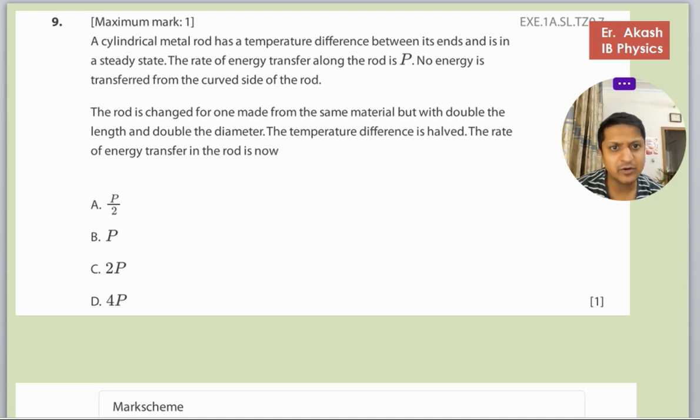The rate of energy transfer along the rod is P. No energy is transferred from the curved side of the rod. The rod is changed from one made from the same material but with double the length, double the diameter, and the temperature difference is halved. The rate of energy transfer in the rod is now?